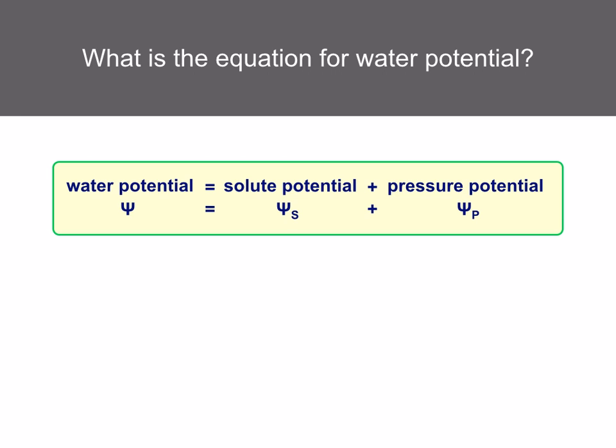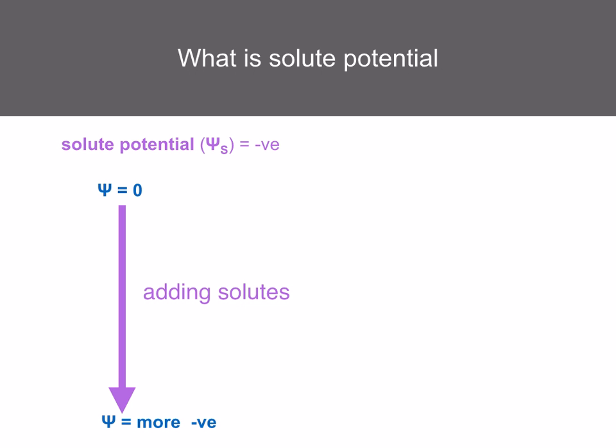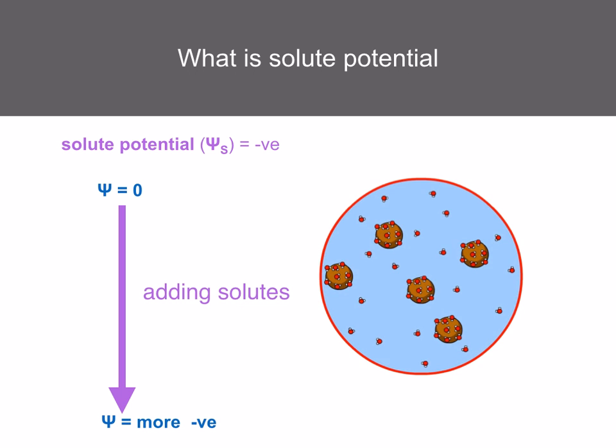Water potential has two components: solute potential and pressure potential. The solute potential is a negative value — the water potential of a solution is affected by the amount of solute it contains. The greater the amount of solute, the more negative the water potential, because it reduces the number of free water molecules that can diffuse. The contribution that solutes make to the water potential of a solution is called solute potential, and it is always a negative value.